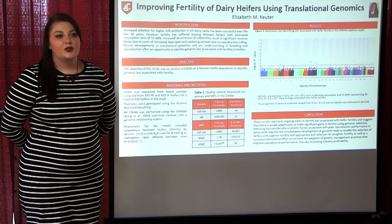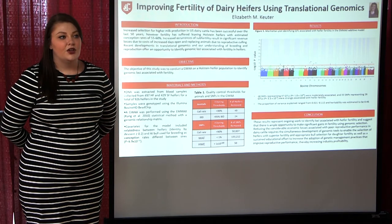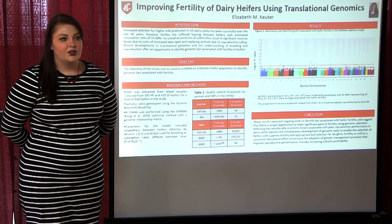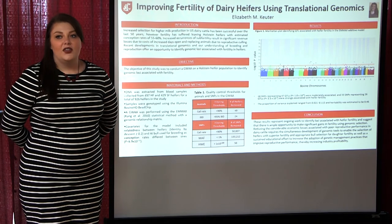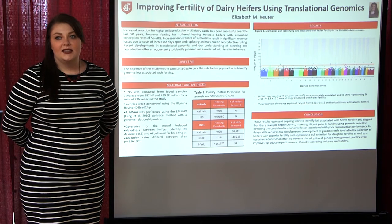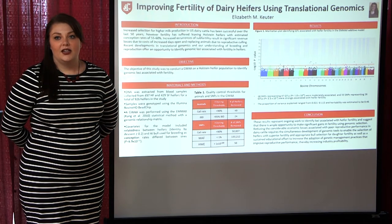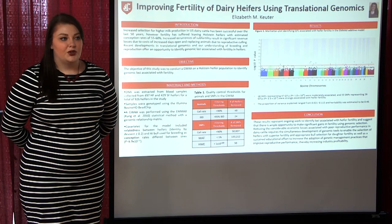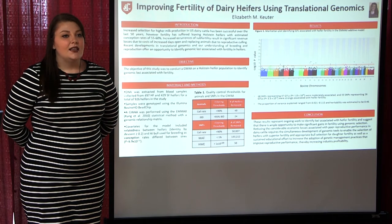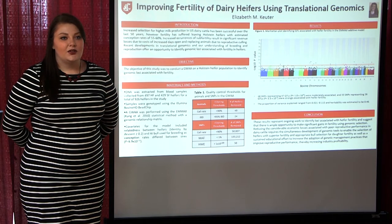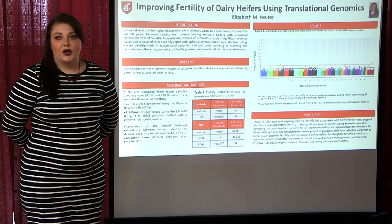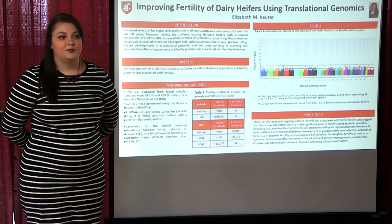The first group consisted of 500 heifers who conceived at the first artificial insemination service, while the second group consisted of 500 dairy heifers who conceived after four or more services. These 800,000 genotypes were represented by a single marker or a single base pair change in the DNA.